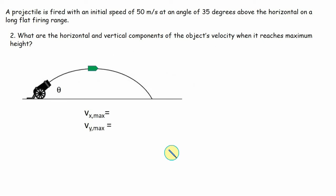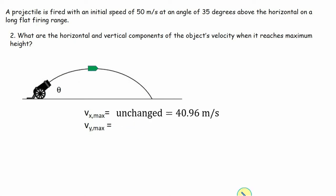Problem two: what are the horizontal and vertical components of the object's velocity when it reaches maximum height? This is pretty simple — we can reason through it. In all projectile motion problems, the velocity in the x direction will never change because there's no acceleration; we're ignoring air resistance, so in the x direction it's still 40.96 meters per second. In the y direction, it starts with 28.68 m/s and slows down the whole time. At maximum height, just like in one-dimensional motion, the speed in the y direction is zero.